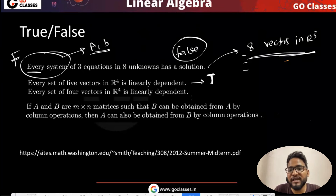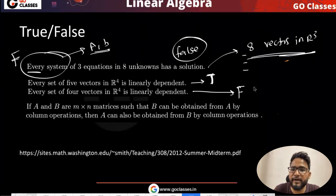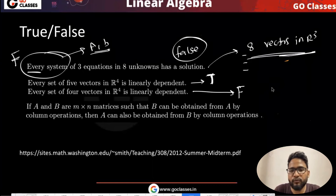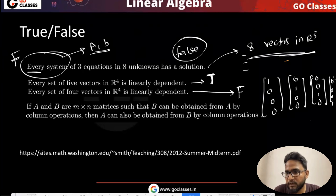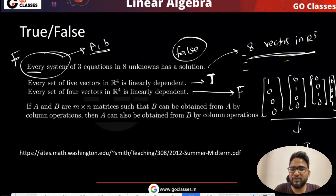Every set of four vectors in R4 is linearly dependent - this is false. Can you give me one set of four vectors in R4 that are linearly independent? Yes - the standard basis vectors in R4, like [1,0,0,0], [0,1,0,0], [0,0,1,0], [0,0,0,1]. These four vectors in R4 are linearly independent. They are saying any set of four vectors is linearly dependent, which is not true. So this is also false.